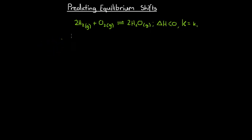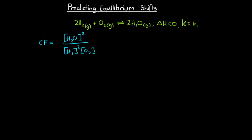Figuring out which of these occurs relies on something called the concentration fraction. For this reaction, the concentration fraction equals the concentration of H₂O squared divided by the concentration of H₂ multiplied by the concentration of O₂. We square the H₂O term because hydrogen has a coefficient of 2 in the chemical equation. If the system is at equilibrium, this concentration fraction equals the equilibrium constant K.